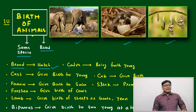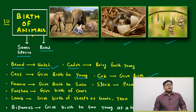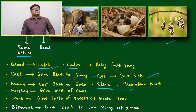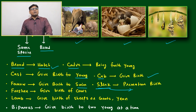'Cast' means give birth to young. 'Cup' means give birth normally. 'Farrow' means give birth to swine. 'Slink' means premature birth of animals. 'Freshen' means give birth to cows. 'Lamb' means give birth to sheep or goats.